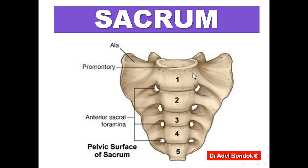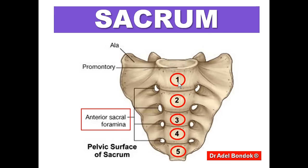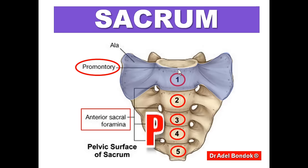Regarding the sacrum, it is formed of five pieces fused together, separated by the anterior sacral foramina. The body of the first piece projects anteriorly to form the promontory. This promontory is more projecting in the male than in the female. The lateral mass is called the ala of the sacrum.